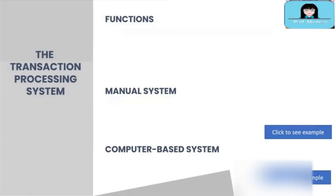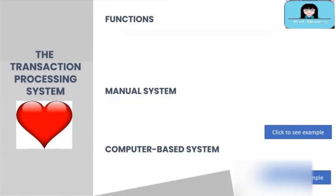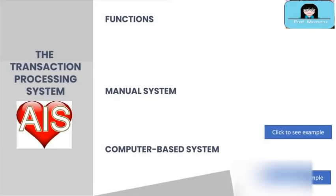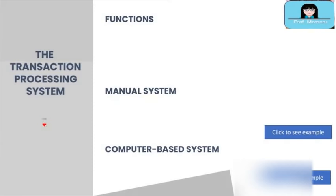The transaction processing system is considered the heart of AIS because all transactions undergo this subsystem before flowing to the other subsystems of AIS, which are GLS, FRS, and MRS mentioned in module one. In this video we will focus on TPS; GLS, FRS, and MRS will be discussed in a separate module. Now let us understand the function of TPS.